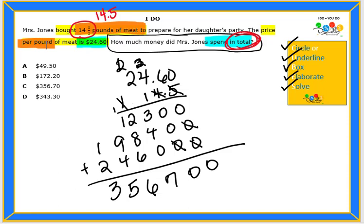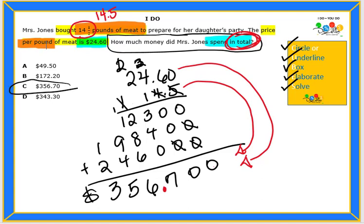Then we go back. Based on our values, we need a total of three digits after the decimal point. So Mrs. Jones spent $356.70. Our answer choice is C.